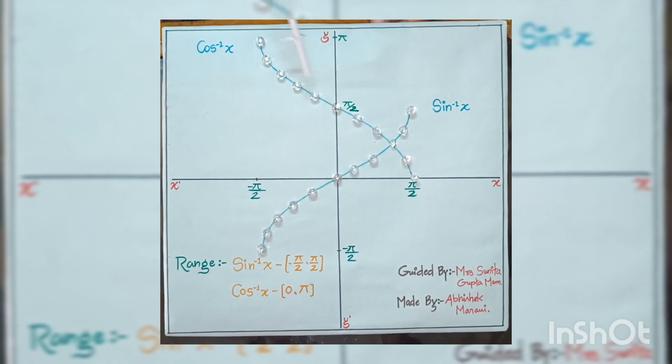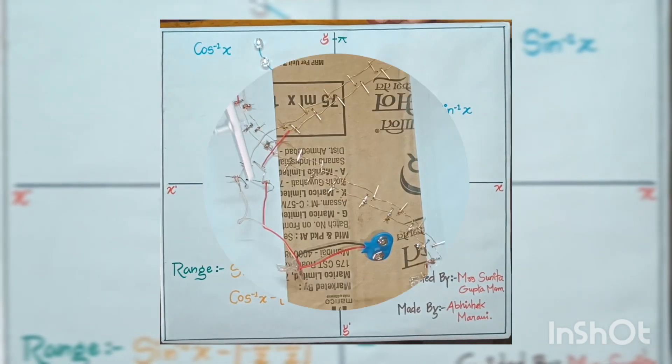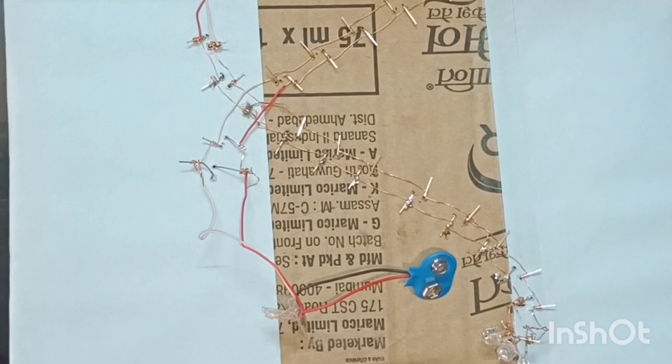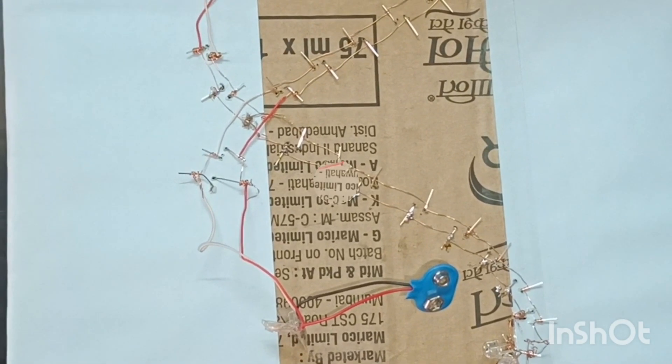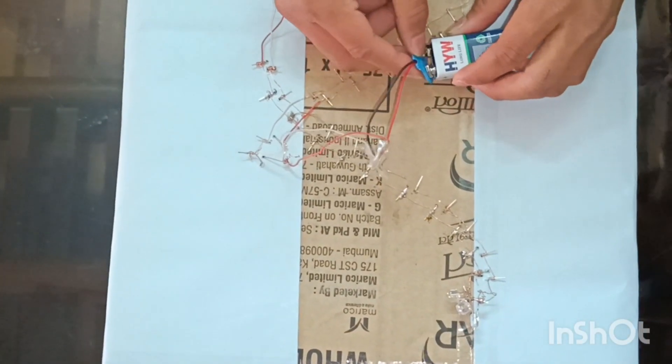To make this project, I have taken some LED bulbs and wires to attach them and its circuit diagram shown in this screen in series. When we attach to battery, then lights glow.